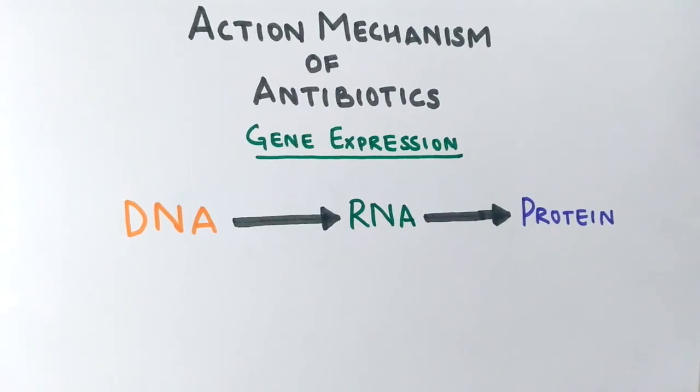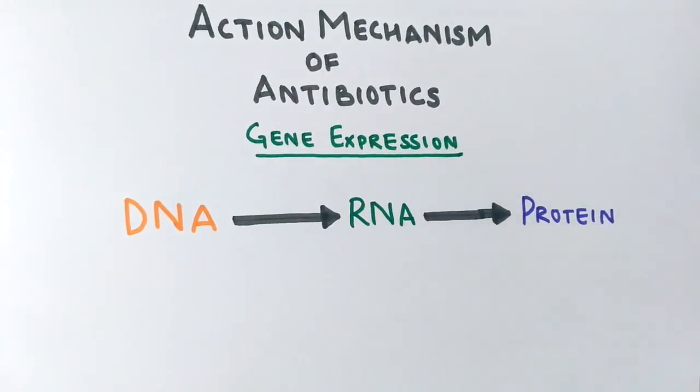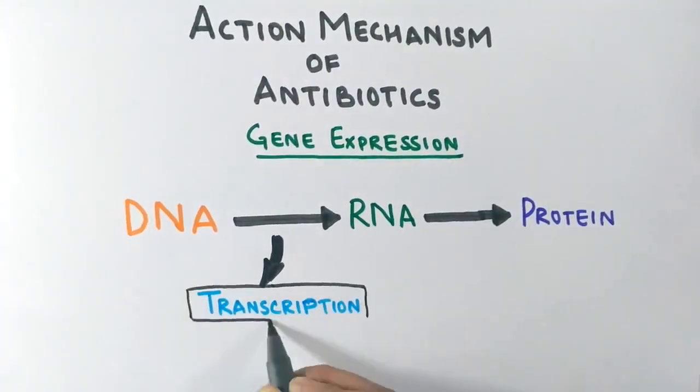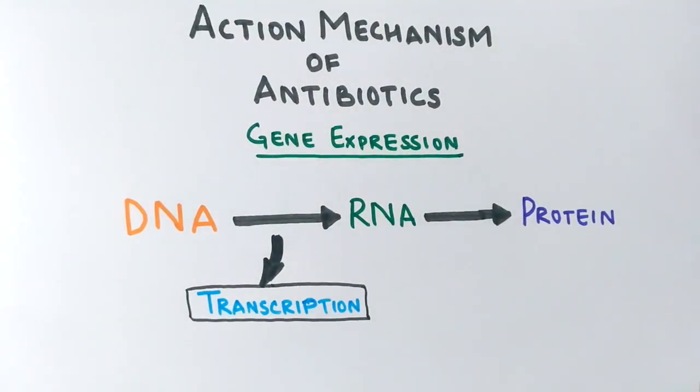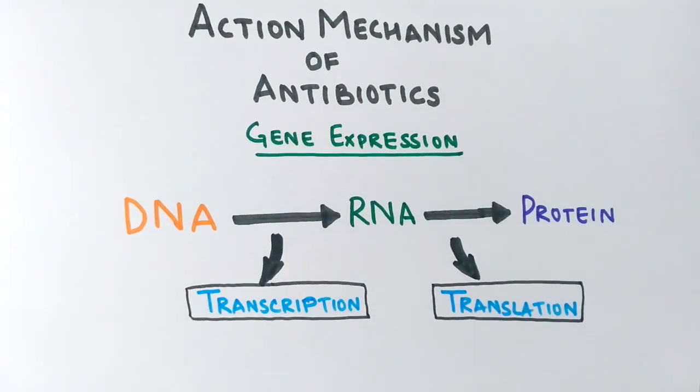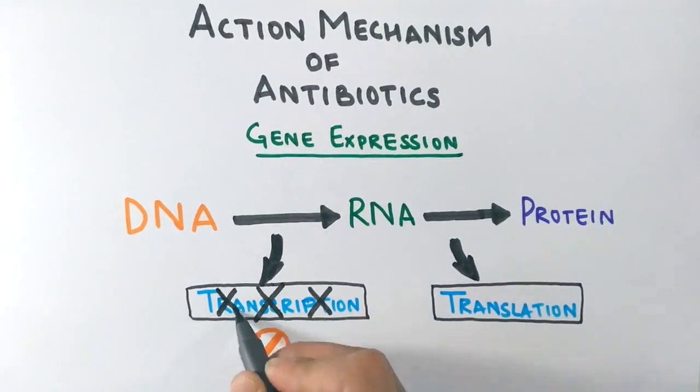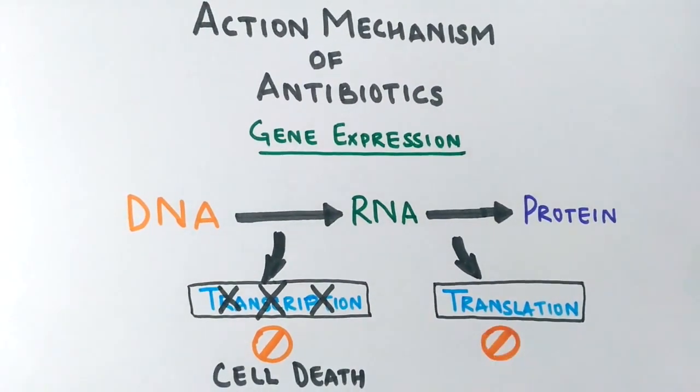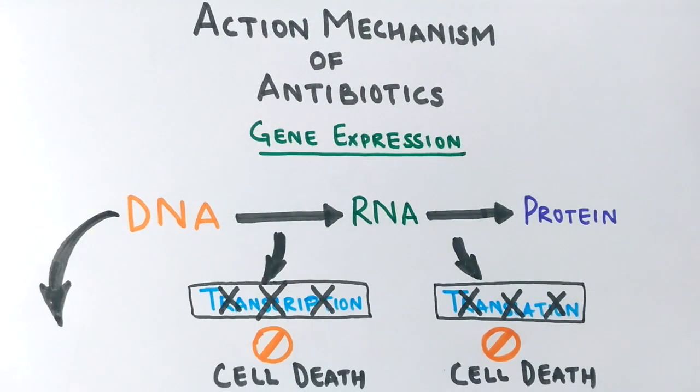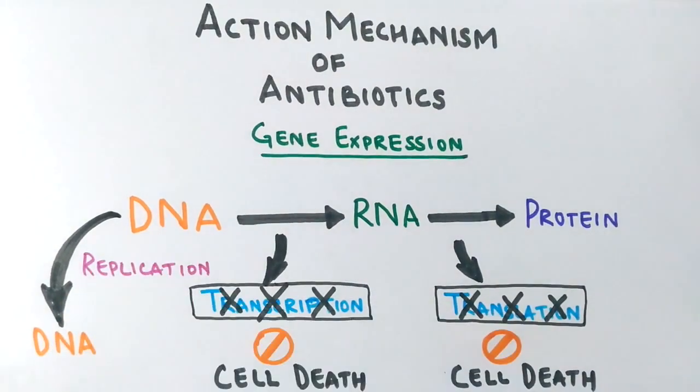DNA transports its information into mRNA molecules through a process called transcription, and from the information of mRNA molecules, bacteria produce protein in the process called translation. When both transcription and translation are stopped by antibiotics, the cell ceases to exist. DNA replication of bacteria is also halted by some antibiotics.